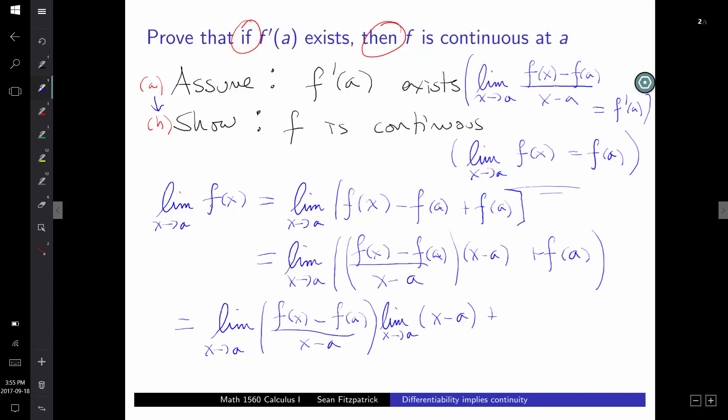Now I can use my limit properties, and I can say, well, this is the limit as X goes to A, F of X minus F of A over X minus A. And I know that limit exists because that's my assumption. Limit of a product is product of the limits. Limit of a sum, that's the sum of the limits.